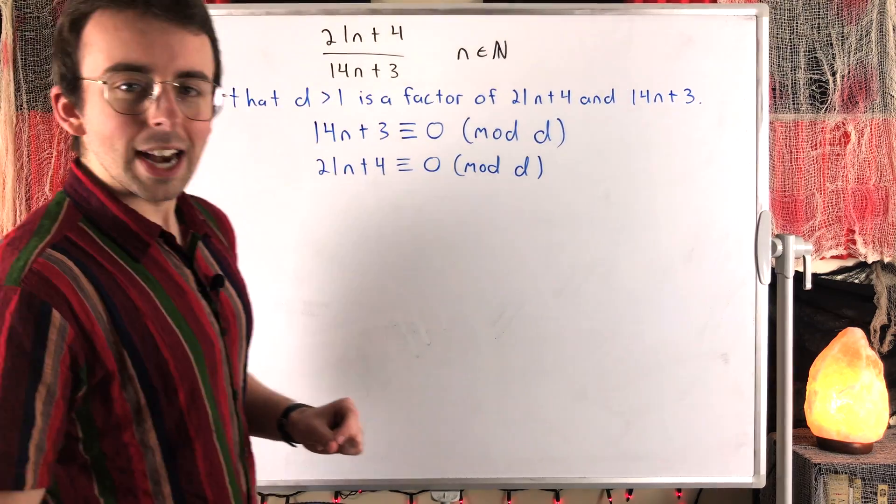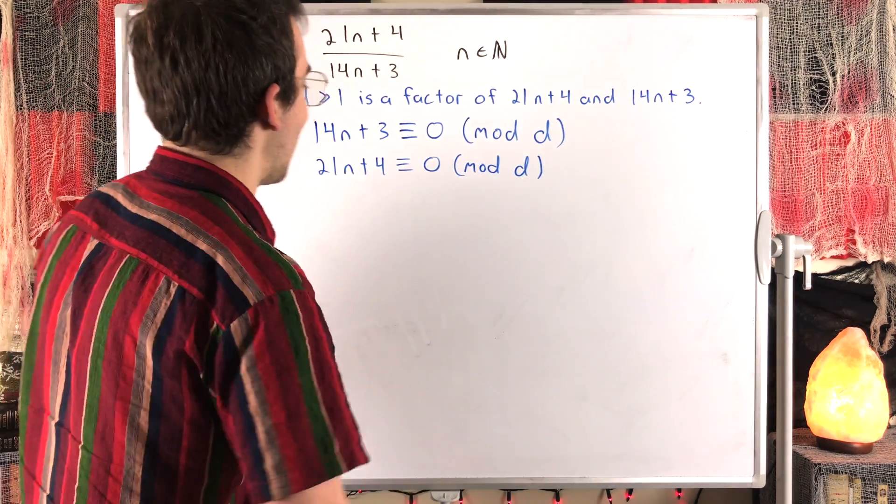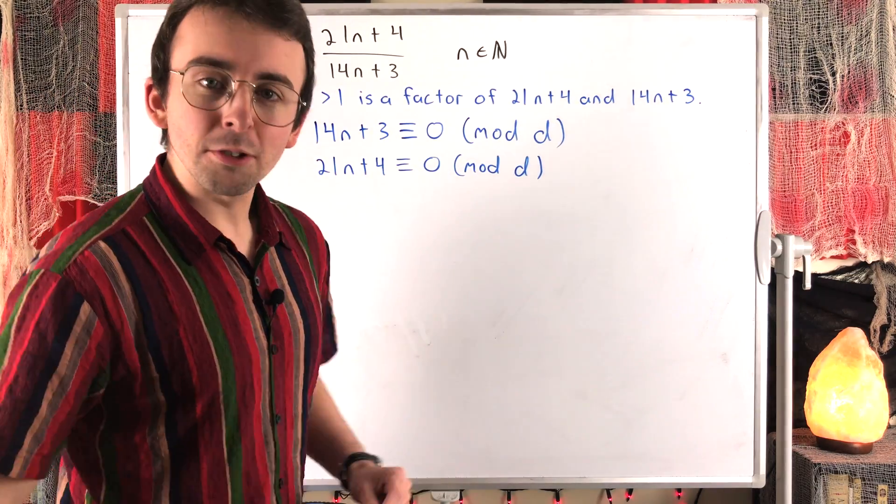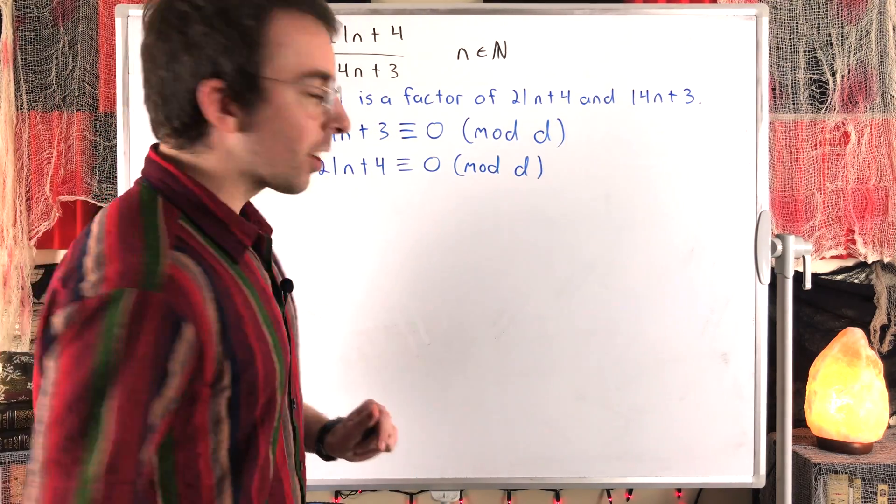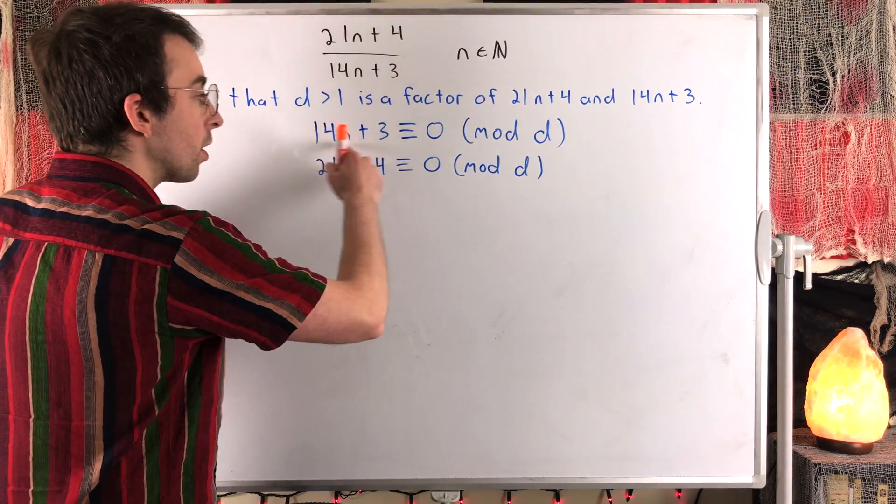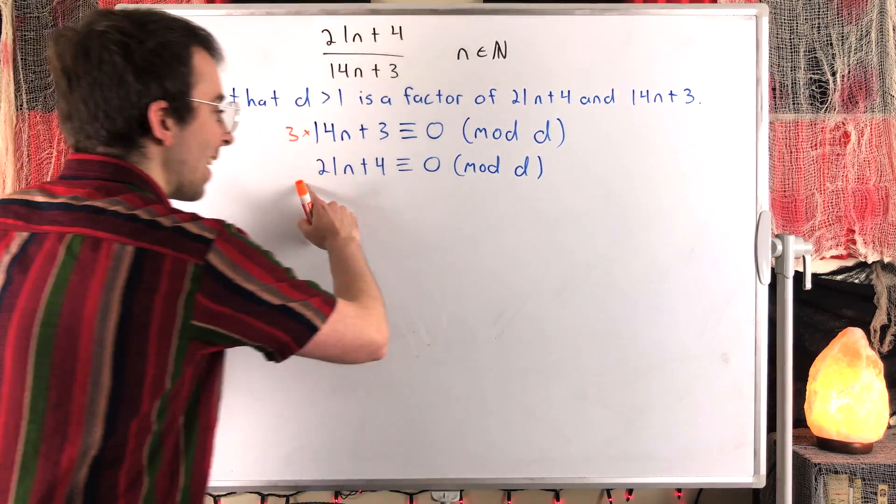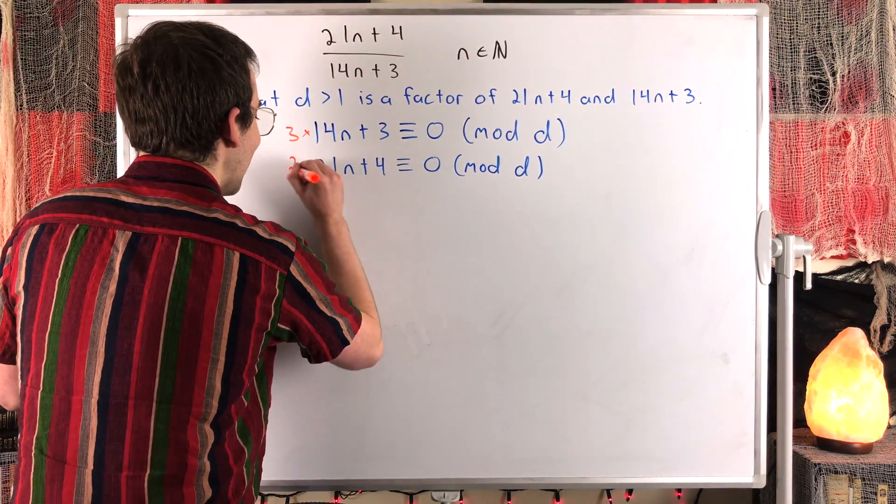If we double 21n, we would get 42n. Then if we multiply 14n by 3, we'd also get 42n. So that'll work just fine. What we'll do is multiply this whole congruence by 3, and we'll multiply this whole congruence by 2.